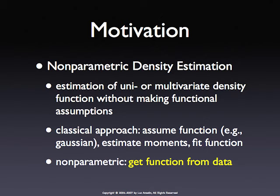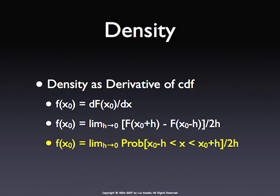A non-parametric approach does not assume a functional form, so it doesn't assume a bell shape. The moments of a distribution are purely descriptive but don't tell you about the full shape. To characterize the full shape, you need more than just mean and variance. Density estimation is basically constructing histograms and smooth density functions from the data — very basic descriptive statistics, but the methodology is the core of non-parametrics. The density function is simply the slope or derivative of the cumulative distribution function — a limit as the interval goes to zero of the difference between function values at two nearby points.